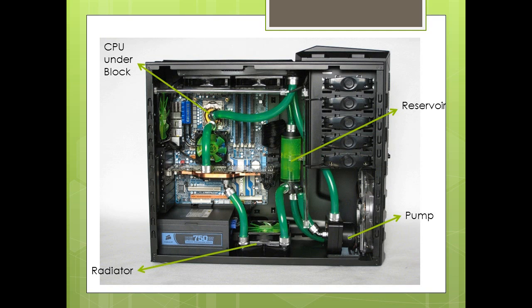Therefore, we have the pump, which makes sure the now warm liquid flows to the radiator. The radiator gets rid of the heat generated inside the liquid, and it then goes on its cycle again — being in the reservoir, then being pumped into the block, picking up heat from the block, then flowing again to the radiator to get rid of the heat. This is one type of water cooling.